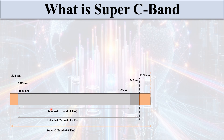To recap: the extended C band goes from 1529 to 1567 nanometers with a total of 4.8 terahertz spectrum. In the Super C Band, we take more bandwidth — a wider wavelength range on both sides of the extended C band — giving us a total spectrum of around 6.1 terahertz, ranging from 1524 nanometers to 1572 nanometers.